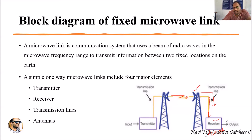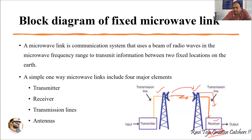After receiving the modulated signal, we need to demodulate it to extract the original data. The input data could be in image, video, audio, or text form. The transmitter modulated it so it could travel through free space, and now the receiver demodulates that signal so the original data is extracted and taken as an output.